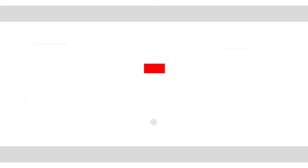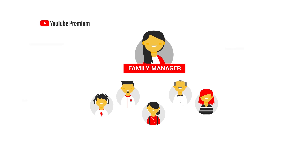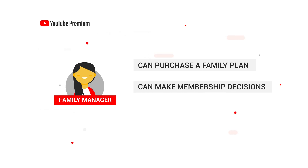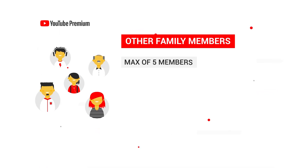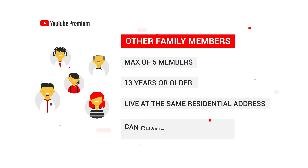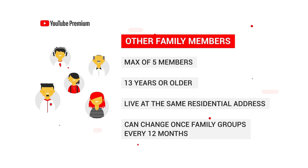Whoever sets up the family plan will be the family manager. The family manager is the only person who can purchase a family plan or make membership decisions for your family. That person needs to be 18 years or older. The five other members of your household must be 13 years or older and must live in the same residential address as the family manager. Members can only change family groups once every 12 months.